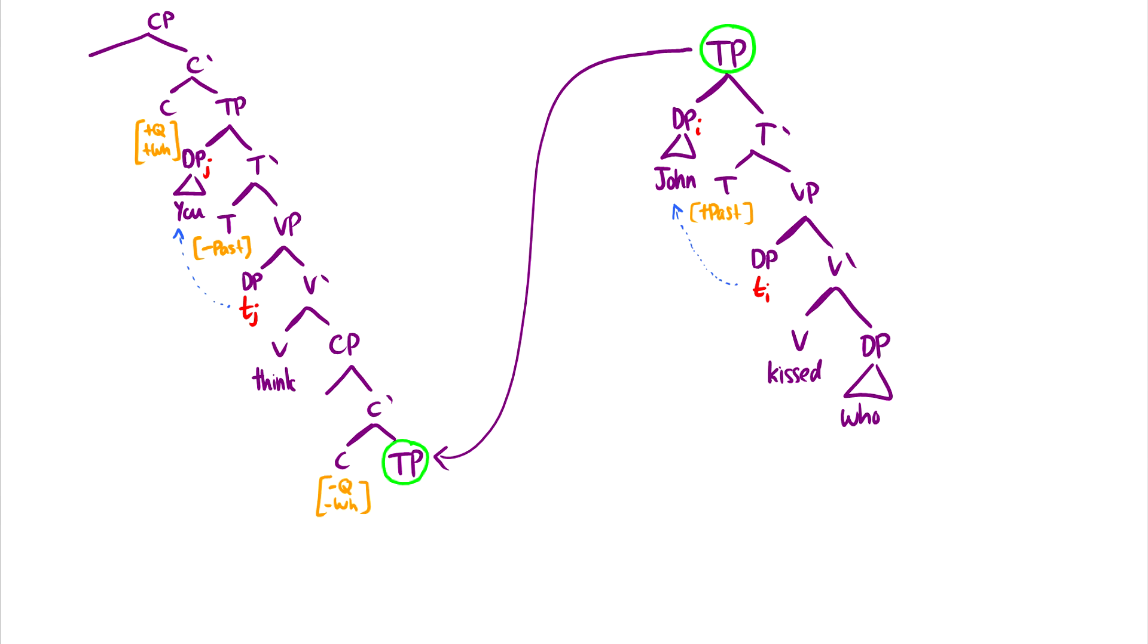And we want who to end up all the way up here in spec CP. So how do we do this? Well, first of all, it's important to note here that who has accusative case. So it does have case. And it has a theta role. So it can't move into positions that give case or theta role. So where does it go first?